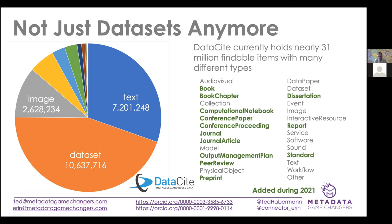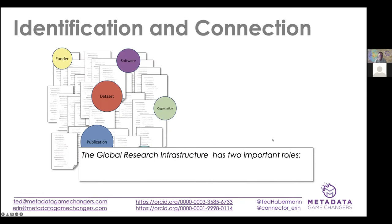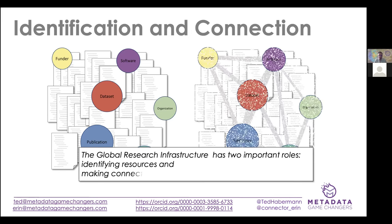The breadth of the global research infrastructure is increasing. The infrastructure has two important roles: the first is to identify things — getting digital object identifiers and other kinds of identifiers to multiple kinds of things — and increasingly important, making connections between those things. That's mostly what I'm going to talk about today: finding identifiers for all kinds of things and using those identifiers to make connections.